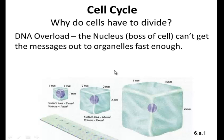Let's look at the two reasons why we do cell division. One is DNA overload. The nucleus, the boss of the cell, can't get messages out to the organelles fast enough. If the nucleus wants to send something to the rough endoplasmic reticulum to make a protein, it sends out a biological message. The ER makes the protein, sends a message back saying yes I got your message, then sends it to the Golgi body, which sends it to some other place in the body.